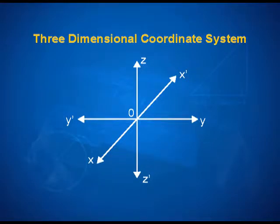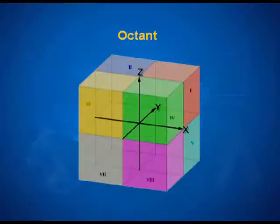These three axes taken in space divide the entire space into octants. The word octant comes from 'octo', meaning 8 — so there are 8 regions that space is divided into. Most of the time, our reference will be for the first octant, which as you can see is defined by the positive x, y, and z axes.